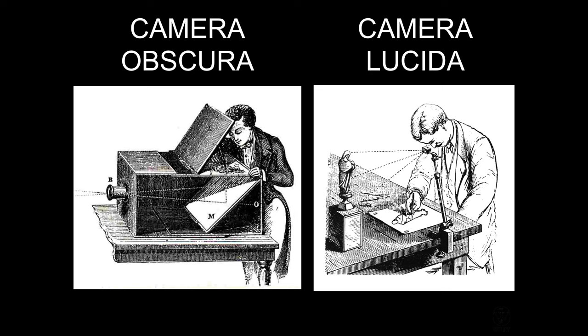There was another invention called the camera lucida. Camera obscura is a dark room; camera lucida is a light room. A light room is much smaller — basically a prism of glass with two silver plates inside. What that would do is reflect whatever it was aimed at so that the artist could look through it and use that light capture to recreate the image by hand.